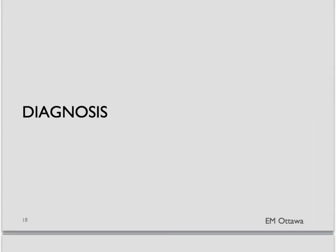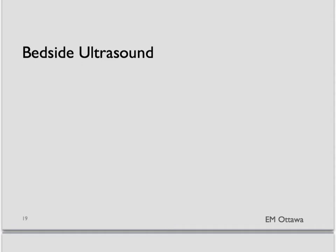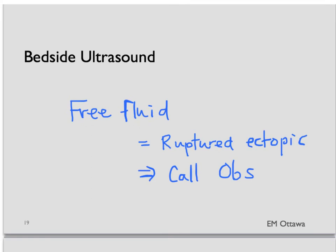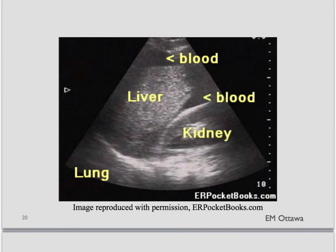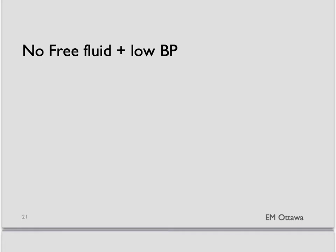For diagnosis, we first use a bedside ultrasound. The first thing we look for is free fluid in the abdomen — if there is free fluid, that means the ectopic pregnancy has ruptured and we are seeing blood freely flowing in the abdomen. We need to call the specialist right away. In this ultrasound image, you can see free fluid in Morrison's pouch between the liver and the kidney. If you still have a hypotensive patient but the ultrasound does not show free fluid, if your index of suspicion is high, we will still call the obstetrician right away, because sometimes the ultrasound might be falsely negative if not a lot of free fluid has collected yet.